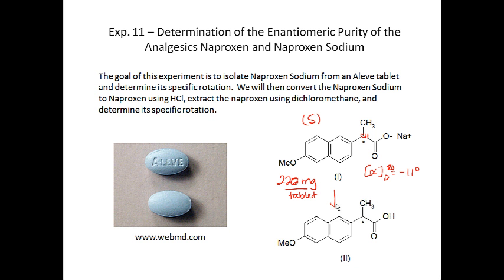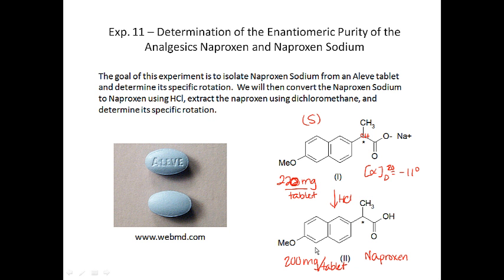When you take an Aleve tablet, the naproxen sodium reacts with the HCl in your stomach acid, which protonates the carboxylate salt to become a carboxylic acid — this molecule is called naproxen, and it's the actual active ingredient. The conversion factor is that 220 milligrams of naproxen sodium per tablet converts to 200 milligrams of naproxen, because naproxen sodium has a higher molecular weight.